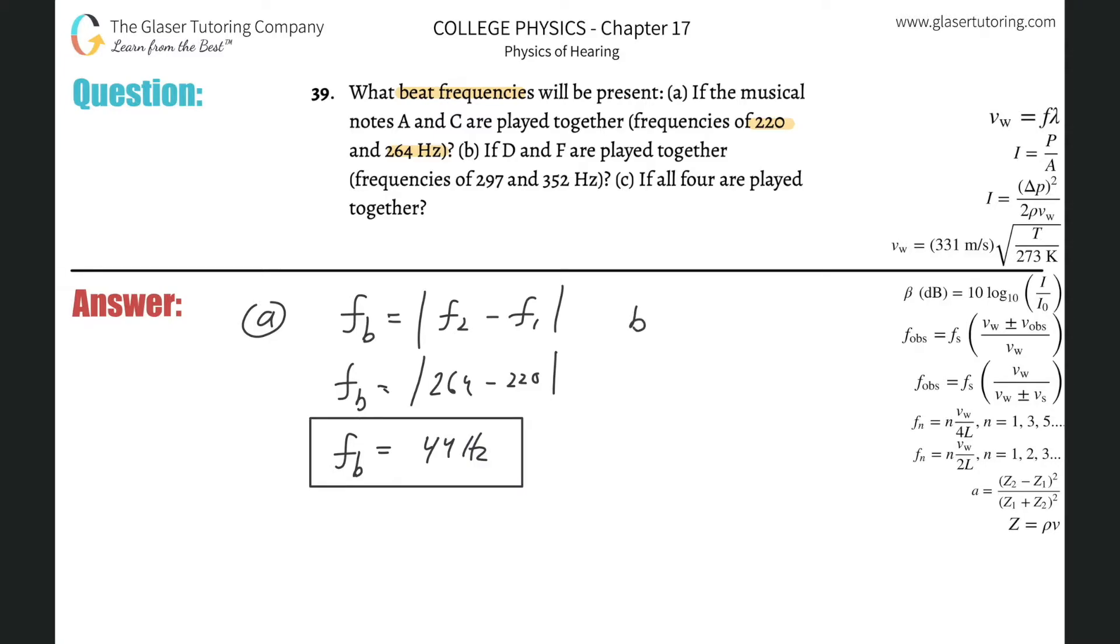For part B, if D and F are played together with these frequencies, the beat frequency again will be f2 minus f1. The beat frequency for D and F is now going to be 352 minus 297.